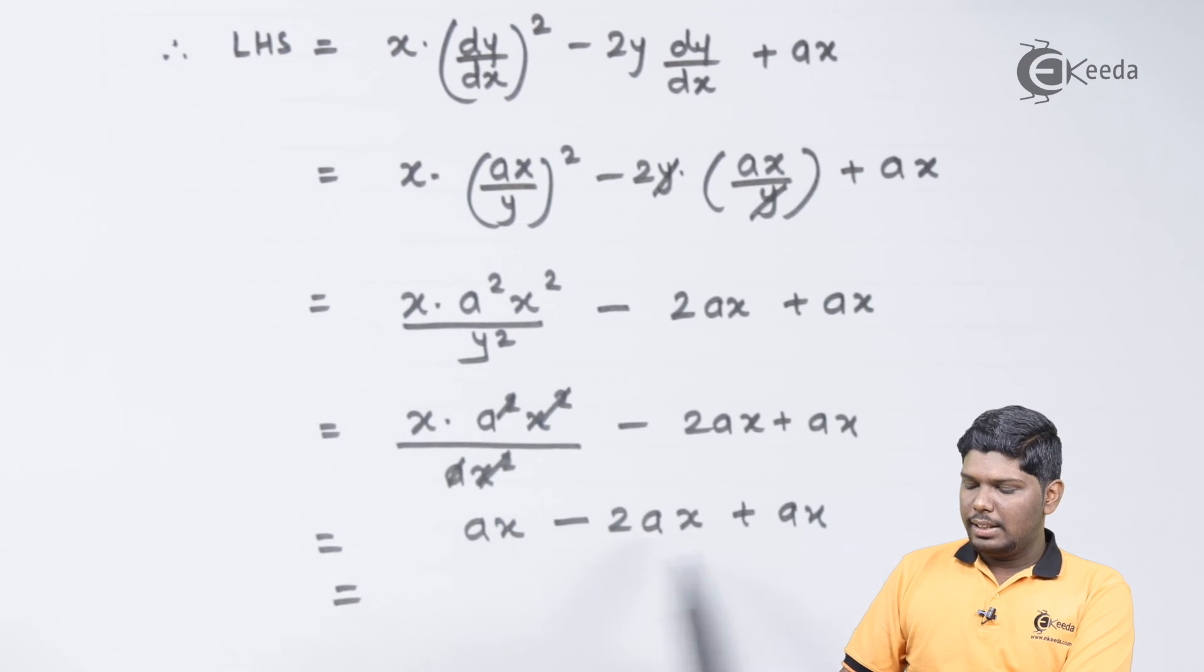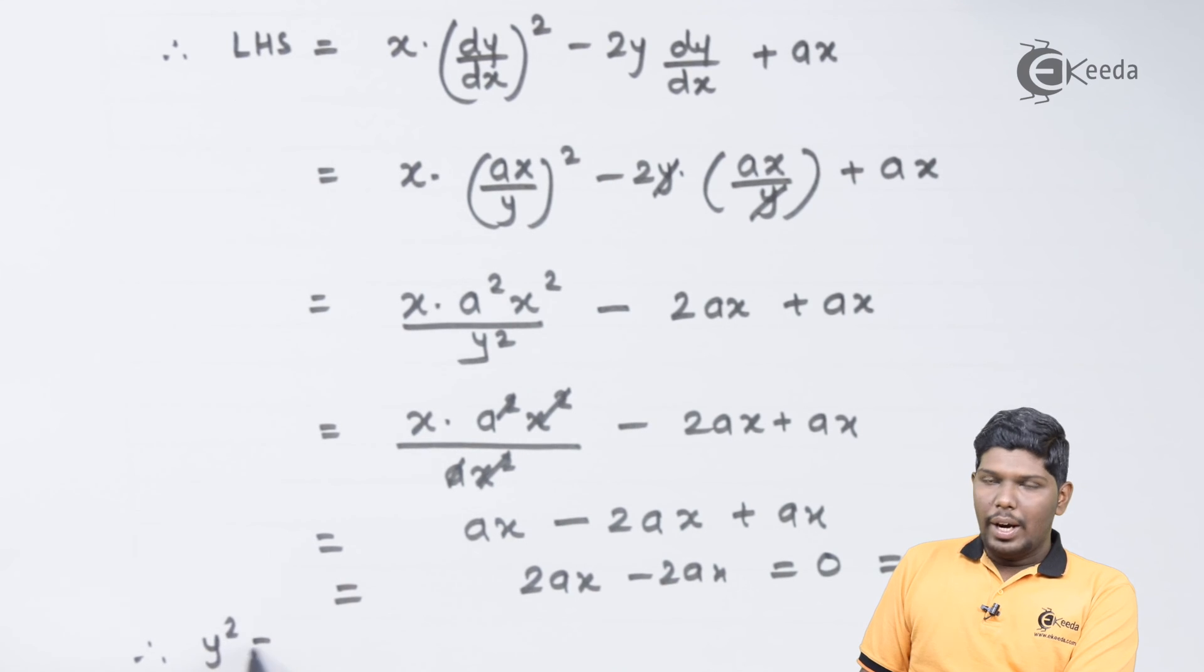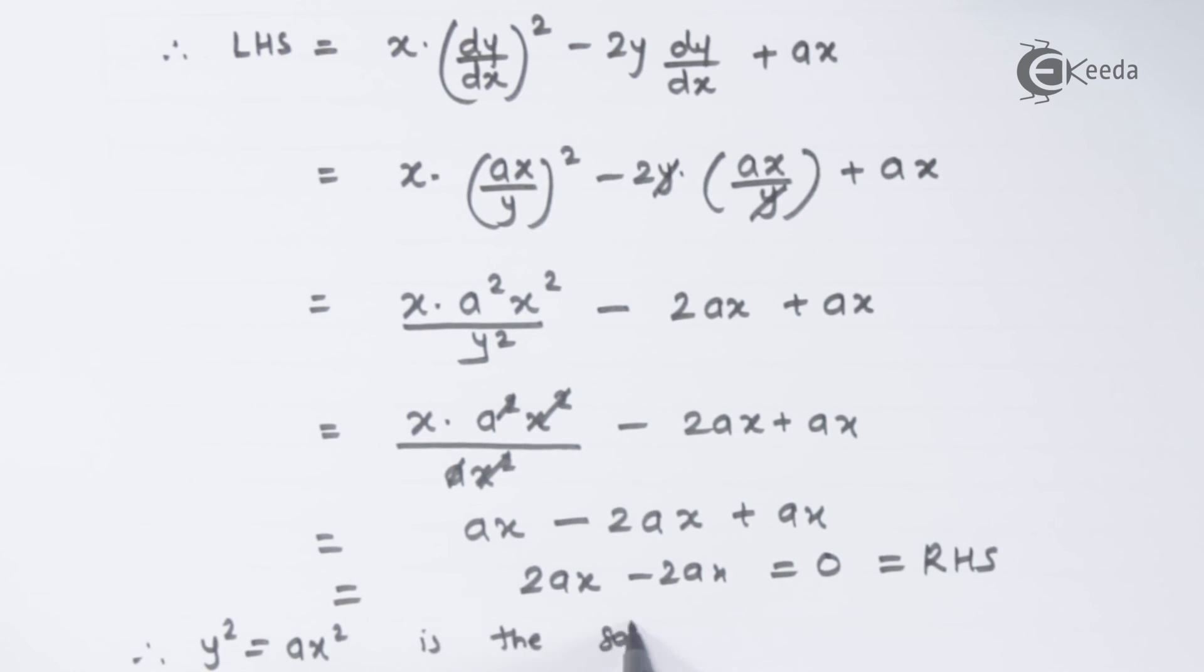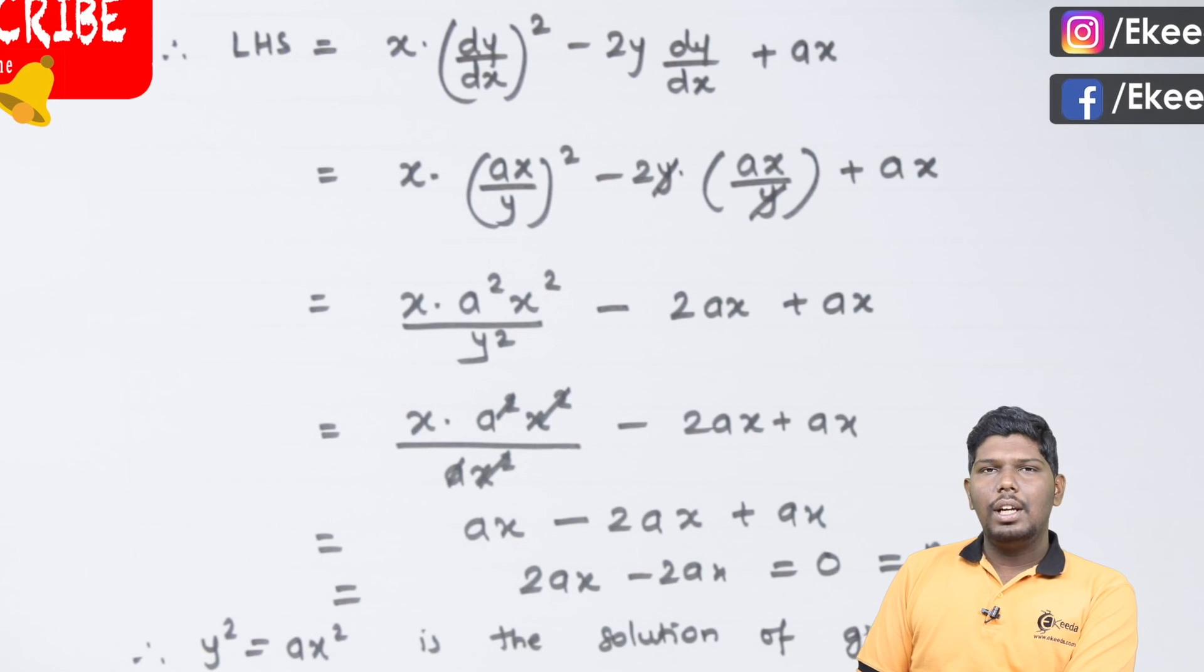...ax - 2ax + ax. Now -2ax + ax will give you -ax, followed by +ax = 0, and that is our RHS. Therefore, y² = ax² is the solution of the given differential equation.